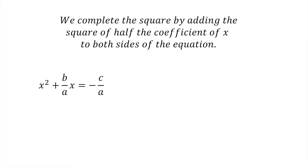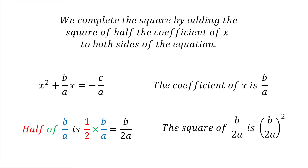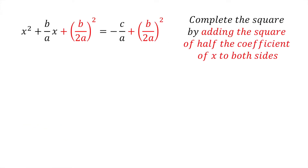Since the coefficient of x is b divided by a, half of b divided by a equals b divided by 2a, and the square of b divided by 2a is (b divided by 2a) all squared. So we now have x squared plus (b divided by a)x plus (b divided by 2a) all squared equals minus c divided by a plus (b divided by 2a) all squared.